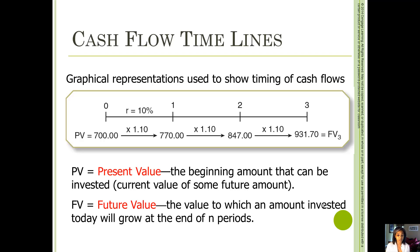The present value is what something is worth to us today — it's the beginning amount, you can think of it that way. The future value is what something is worth to us at some specific point in the future.